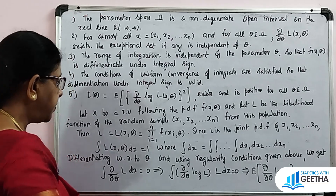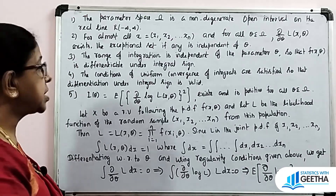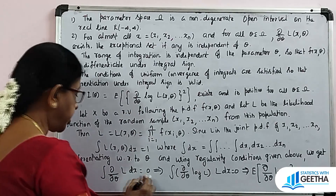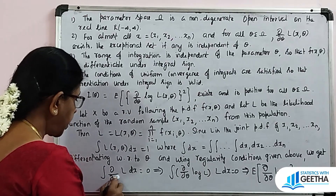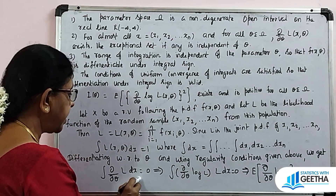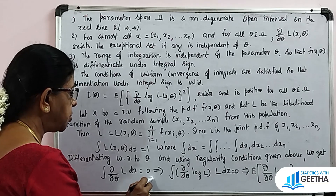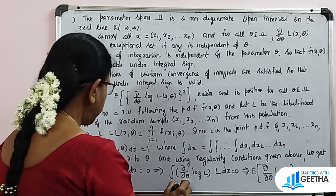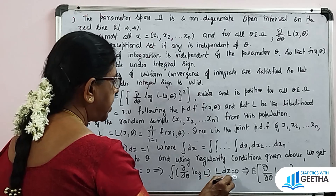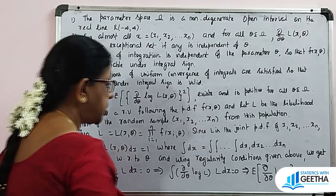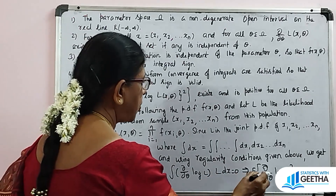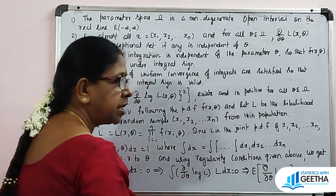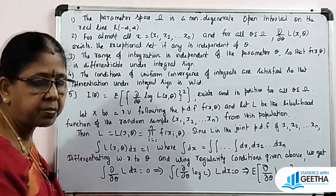Differentiation under the integral sign is allowed and valid by the regularity conditions. So ∫ ∂/∂θ L dx = 0 implies ∫ (∂/∂θ log L) · L dx = 0, which implies E[∂/∂θ log L] = 0. This is equation number 1.